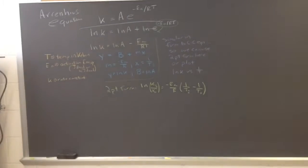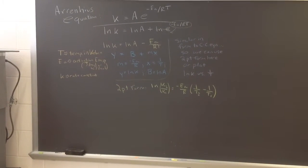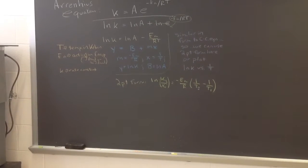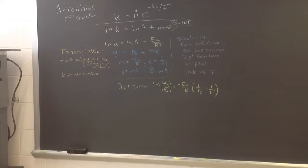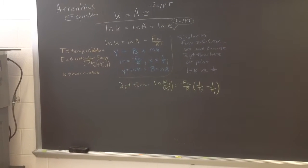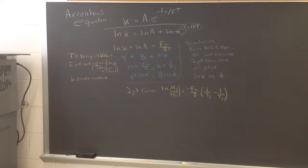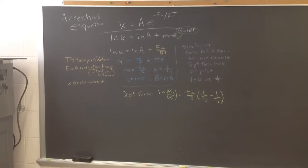Likewise, if we don't have a plot, we have just a couple temperatures and rate constants, we could get E sub A, or solve for something else using this two-point form as shown here on the bottom, much like we did with Clausius-Clapeyron for heats of vaporization and such. So, with this, we're going to take a moment, I'm going to pause, and we're going to look at an example problem.